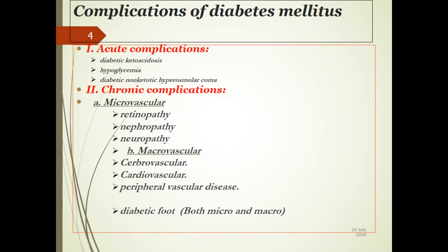Now let's talk about complications of diabetes. Complications are divided into two parts: acute complications and chronic complications. Acute complications are three: diabetic ketoacidosis, hypoglycemia, and diabetic non-ketotic hyperosmolar coma. Chronic complications are further divided into microvascular complications — affecting small blood vessels or capillaries, that is retinopathy, nephropathy, and neuropathy — and macrovascular complications.